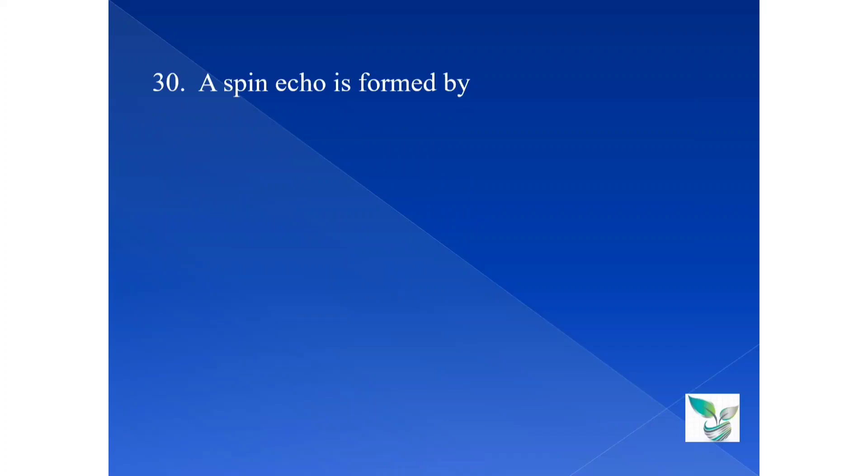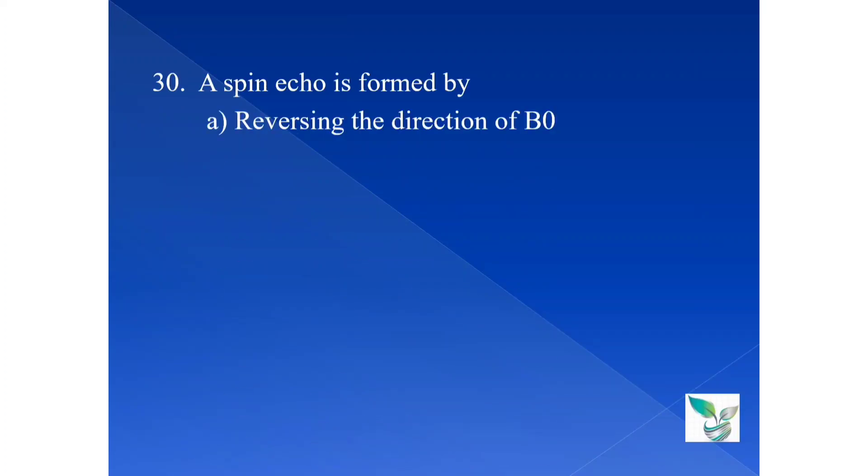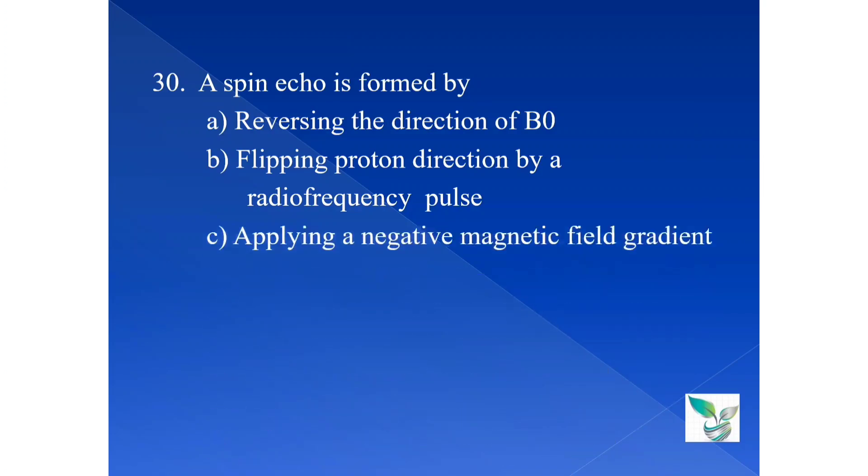Moving on to the next question, question number 30. A spin echo is formed by option A, reversing the direction of B0, that is main magnetic field. Option B, flipping proton direction by a radiofrequency pulse. And option C, applying a negative magnetic field gradient. The answer is option B, flipping proton direction by a radiofrequency pulse.